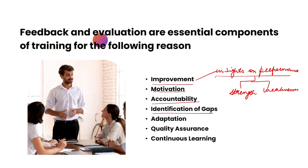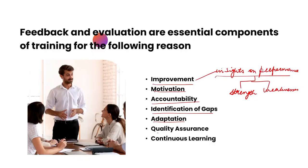Next is identification of gaps. Through evaluation, trainers can identify the gaps in knowledge, skills, and can further figure out what can be done to improve those gap areas. Then is adaptation — feedback and evaluation enable trainers to adapt their training methods and materials based on the needs and preferences of the trainees. By soliciting feedback, both trainees and trainers can make adjustments to optimize learning outcomes and enhance overall effectiveness. Quality assurance can further be enhanced by means of feedback and evaluation.